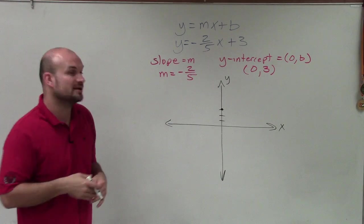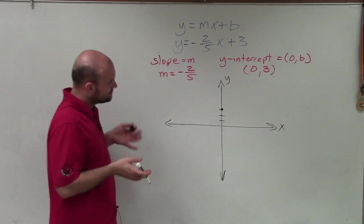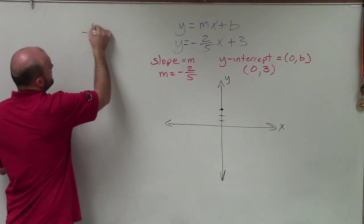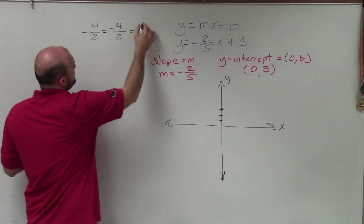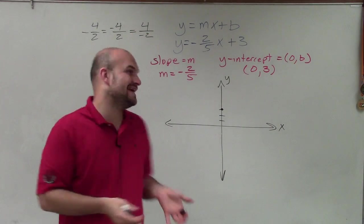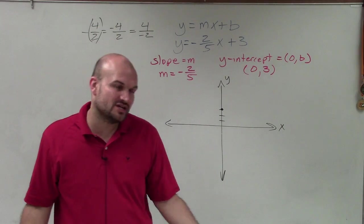Now what I'm going to do is apply the slope to find my next point. And the negative sign gets a lot of students confused, but I want to make sure you're OK with negative 4 divided by 2 equals negative 4 over 2, which equals 4 divided by negative 2. So where the negative sign actually is is not really going to change anything.